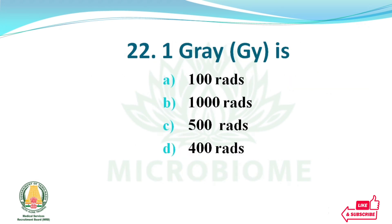One gray (Gy) is equal to — options: 100 rads, 1000 rads, 500 rads, 400 rads. The right answer: option A, 100 rads.